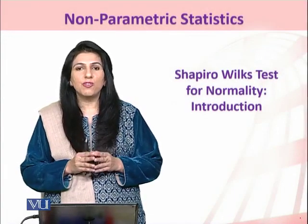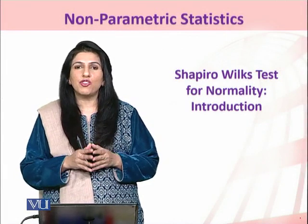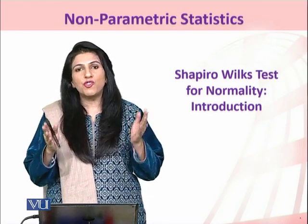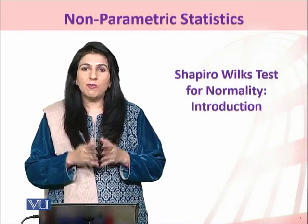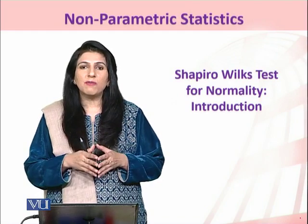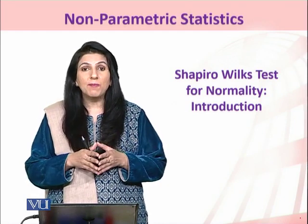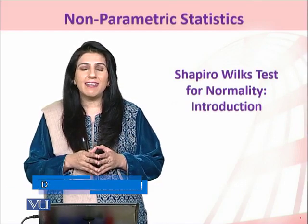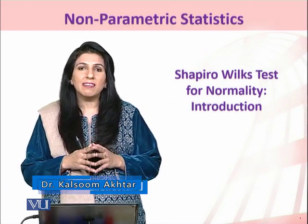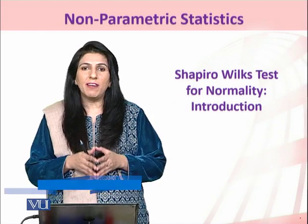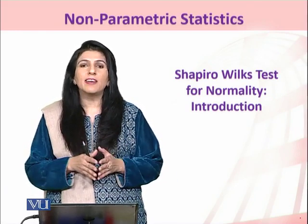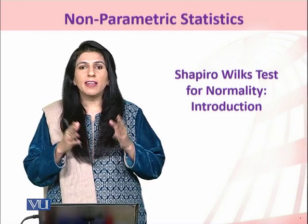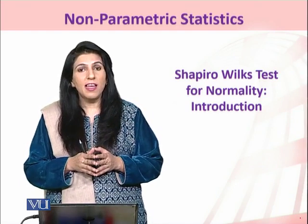Shapiro and Wilkes introduced a test to test the assumption of normality in the data. Most parametric tests assume that the sample drawn from a population must follow normality. Shapiro developed the test independently, but later Wilkes, a statistician, also developed a test for normality. It was named the Shapiro-Wilkes test because both of them almost concluded the same procedure for testing the normality of the data.